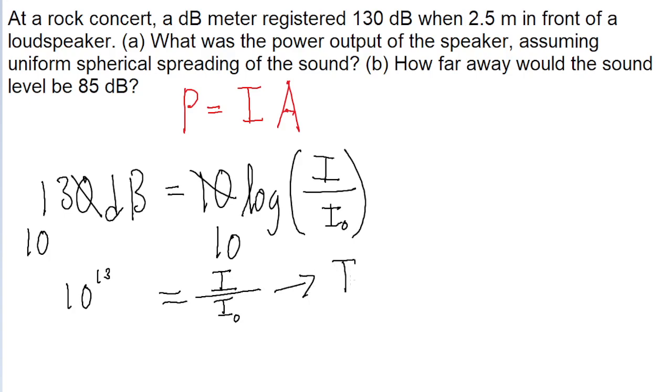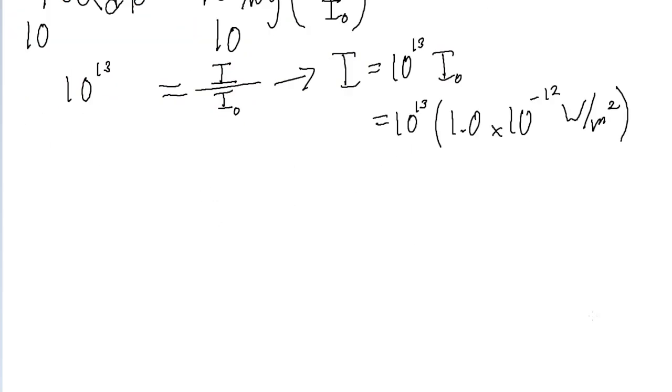So solving this for I, that is I equals 10 to the power of 13 multiplied by I0. And I0 is a constant, so we'll put that into a calculator. 10 to the power of 13 multiplied by 1.0 times 10 to the power of negative 12 watts per meter squared. This gives us an answer of 10 watts per meter squared.